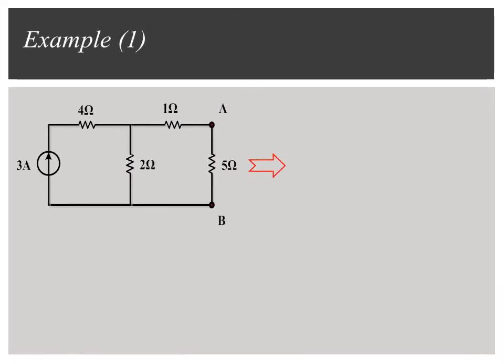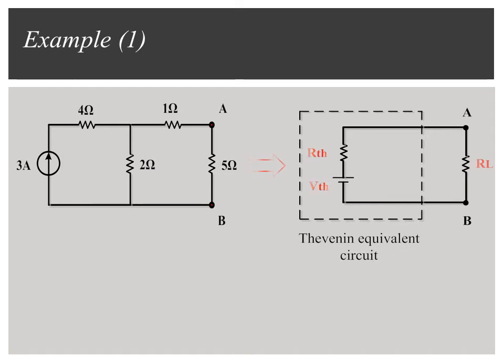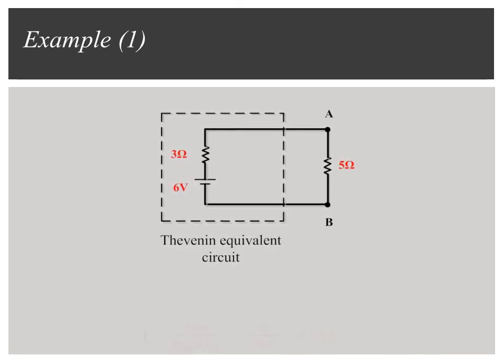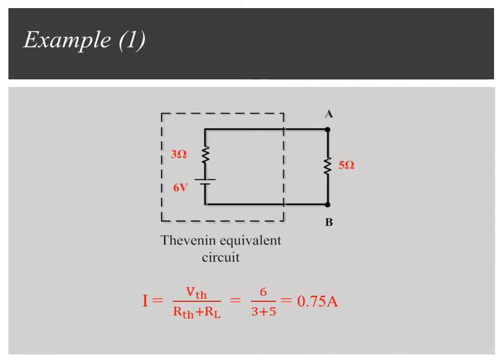Now, replace the original network by the Thevenin equivalent circuit and load resistor. The current is equal to 0.75 A.